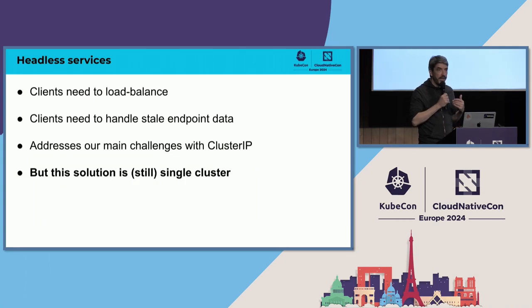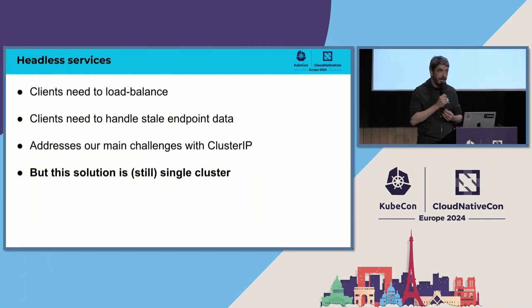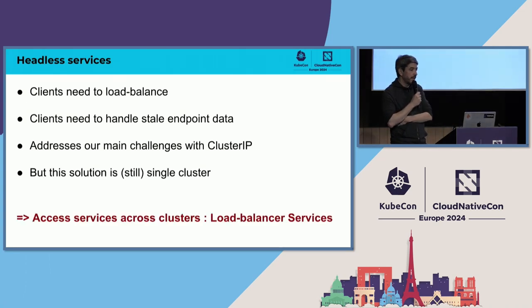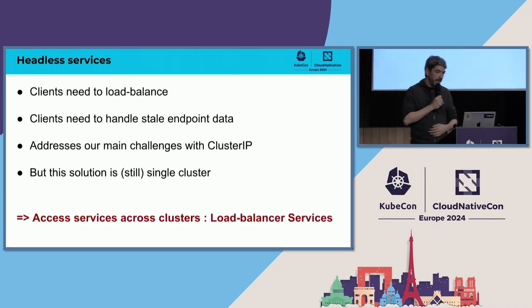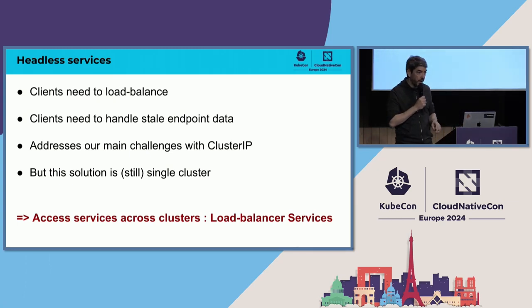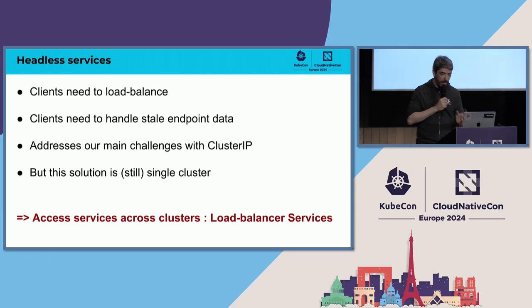This solution is much better, however it's still single cluster. So what happens if we want to send traffic across clusters? There are multiple ways to do this and we're going to talk about the two main ones in Kubernetes, which are load balancer services first, and then we'll talk about another one.